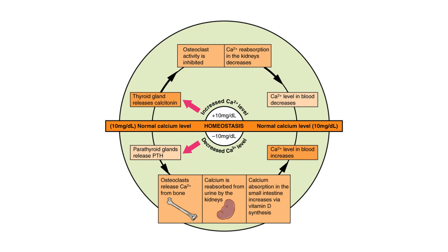Let's say that blood calcium levels are rising. This rise in blood calcium promotes the release of calcitonin by the thyroid gland and decreases calcium reabsorption by the kidneys. Calcitonin inhibits osteoclasts, which work to move calcium from bones into blood. Inhibiting osteoclasts will inhibit this movement of calcium and decreases blood calcium so it falls within the normal range.